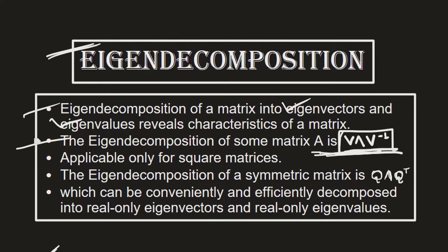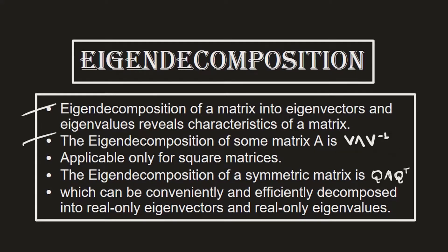The last element, V-inverse, is the calculated inverse of the matrix V, which is the concatenation of all the eigenvectors. You need to keep in mind that eigendecomposition is applicable only for square matrices, meaning the number of rows and columns must be equal.